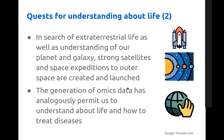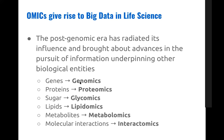Omics data essentially come from genomics, proteomics, glycomics, lipidomics, metabolomics, and interactomics — you're just adding the term 'omics' at the end. You're collecting data on genes, proteins, sugars, lipids, metabolites, and molecular interactions. Collectively, all of this information is known as omics data.